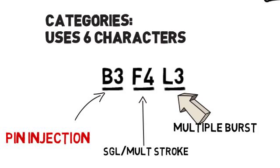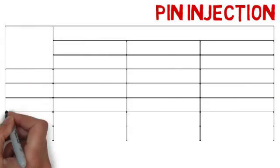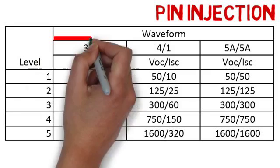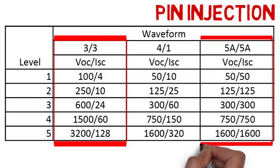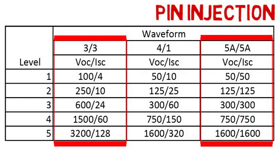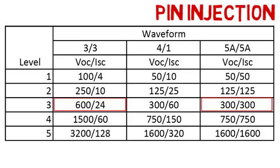Since we're testing to B3 for pin injection, we'll be testing to the B waveform set. This includes waveform 3 and 5A. You can see that at level 3, waveform 3 is 600 volts and 24 amps. Waveform 5 is at 300 volts and 300 amps.